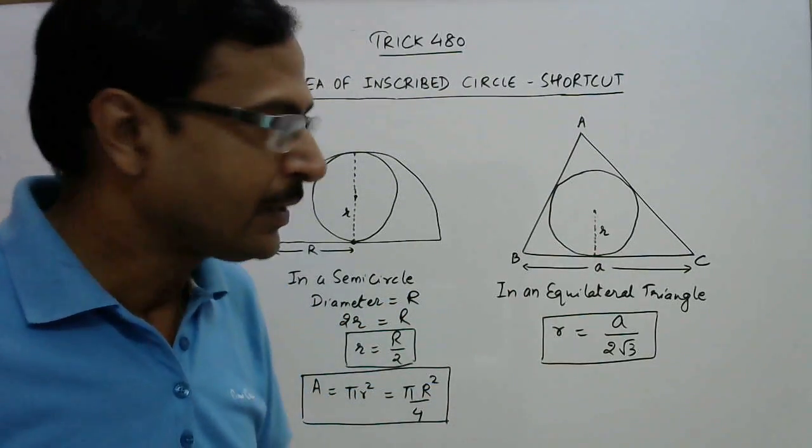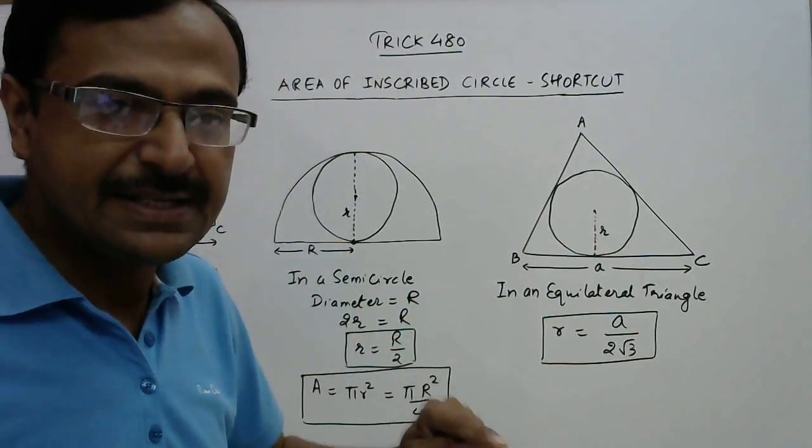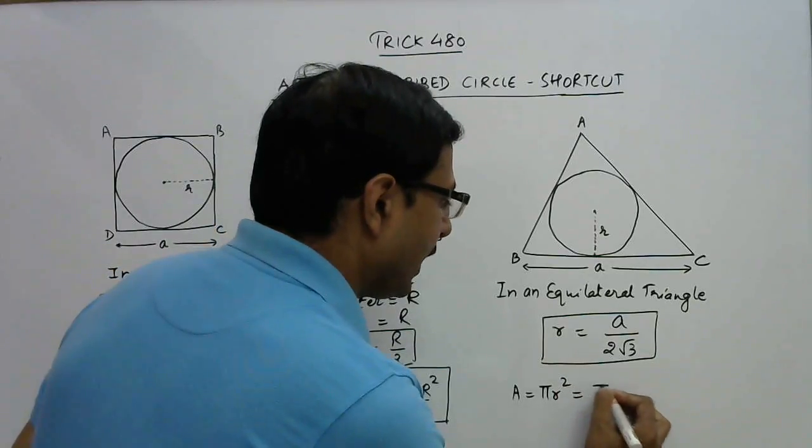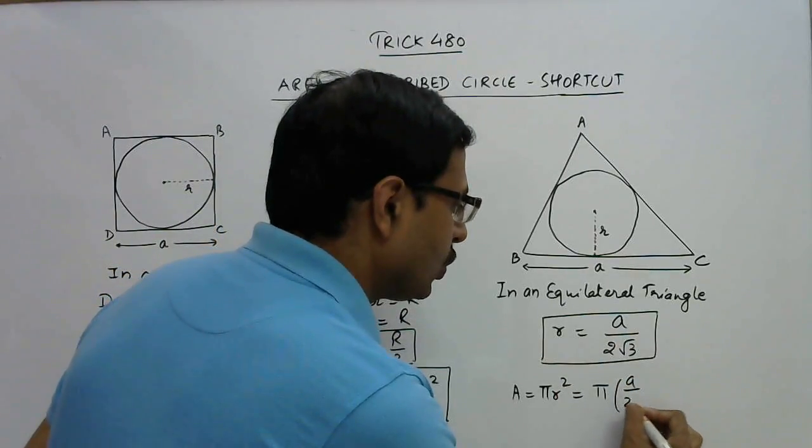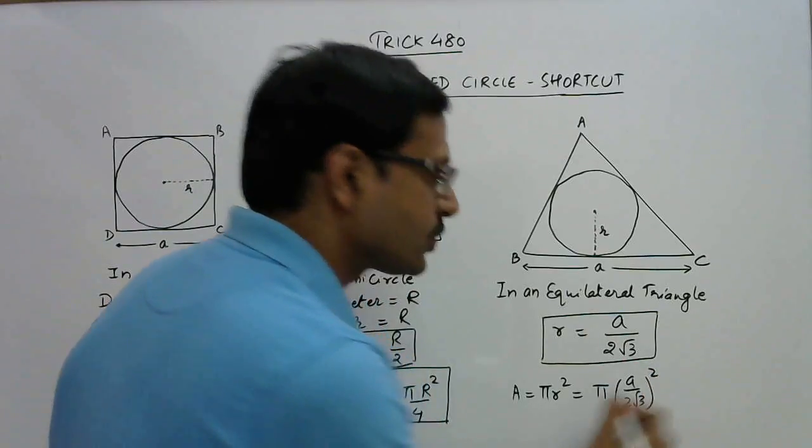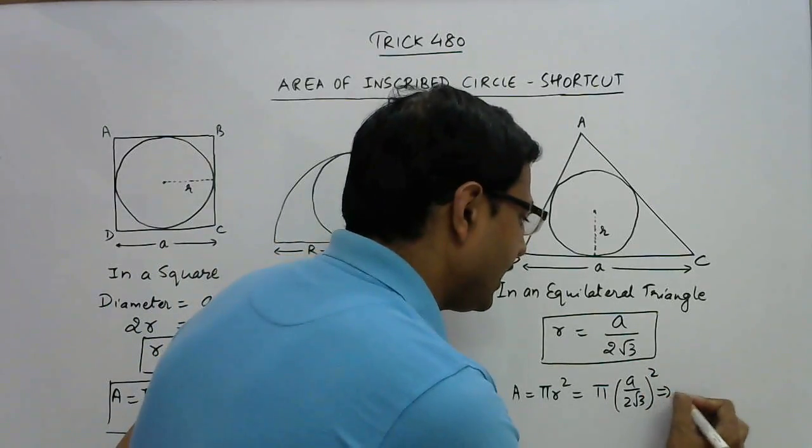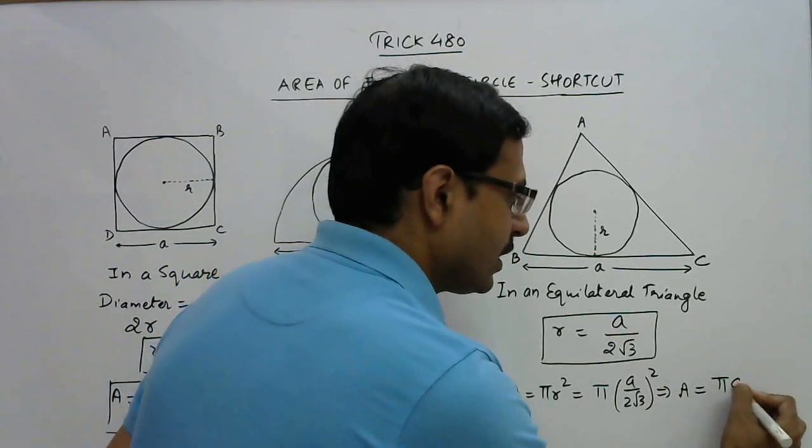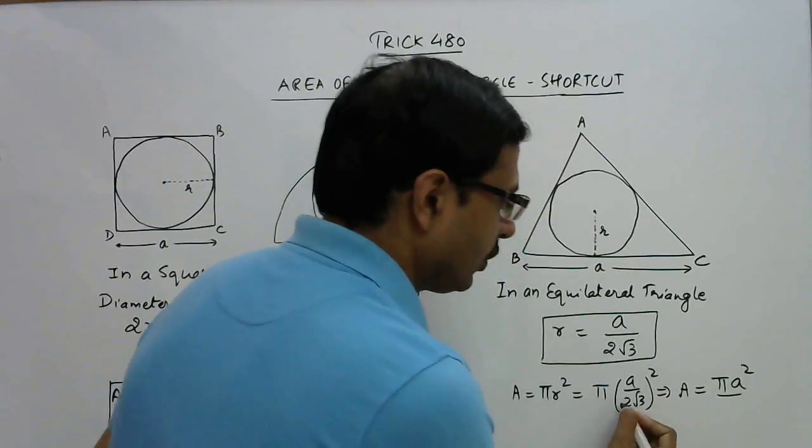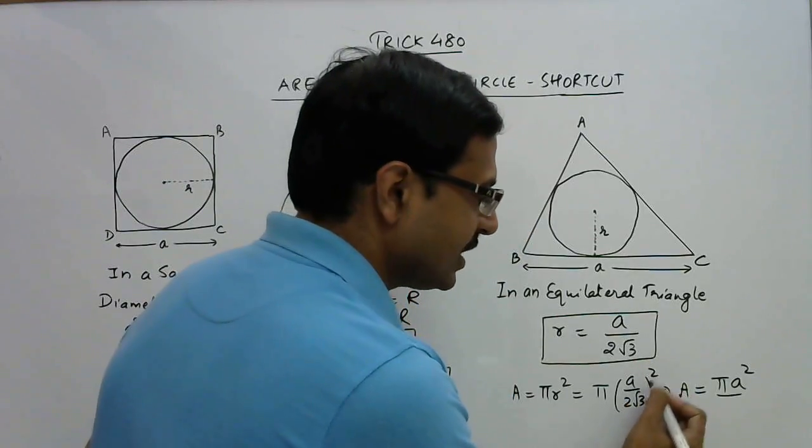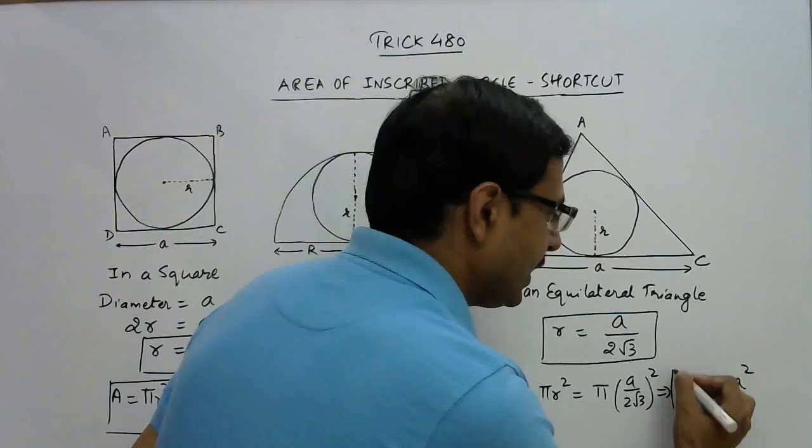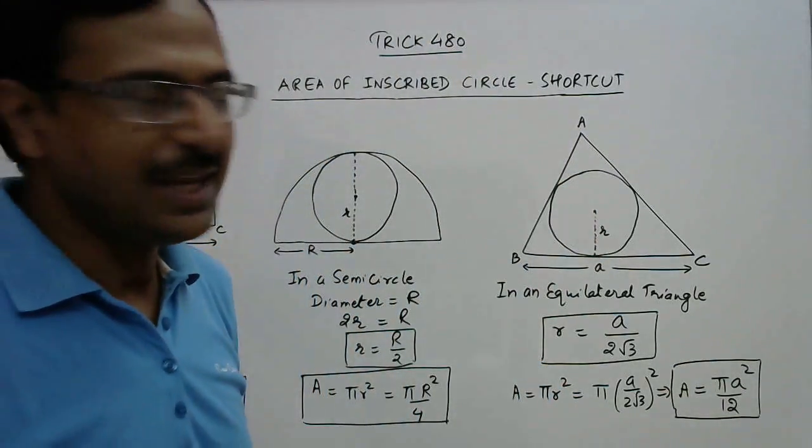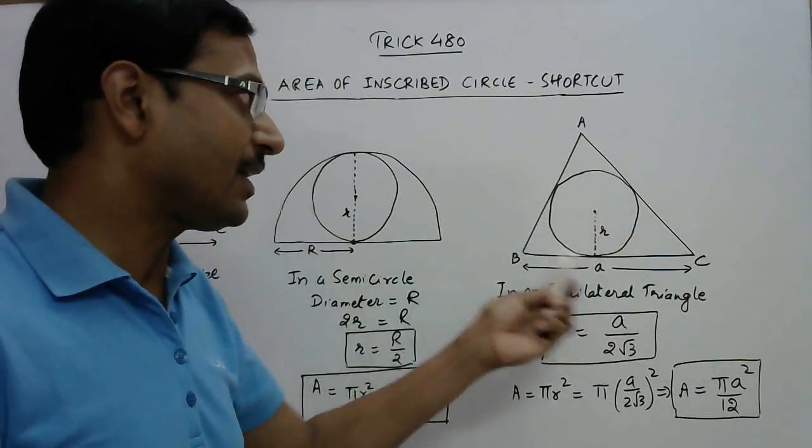If you remember the formula for finding the radius, then finding the area will be very easy. So let us derive the formula for area. Area is πr², so π into square of this: a upon 2√3 whole square, which gives area as πa² upon 2² is 4 and √3² is 3, 4×3 is 12, so πa² upon 12. This is the formula for finding the area of the circle inscribed in an equilateral triangle.